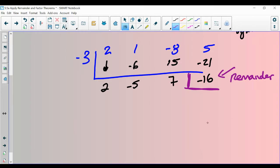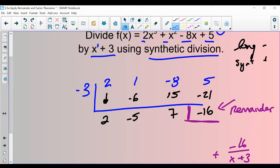So in our final answer, it's going to end with plus negative 16 over x plus three. How do we get that? Well, negative 16 is the remainder, and what we're dividing by is x plus three.